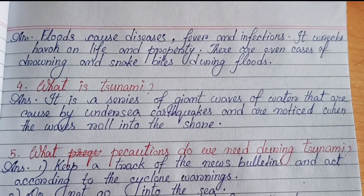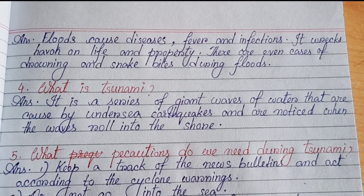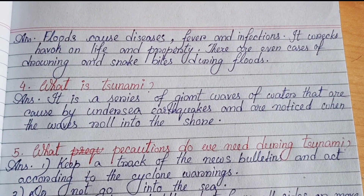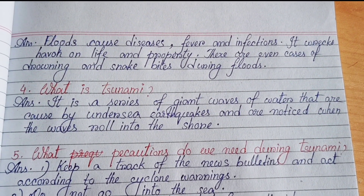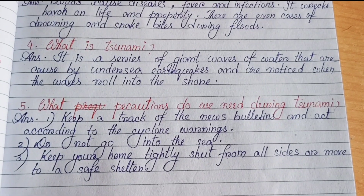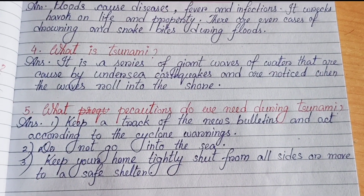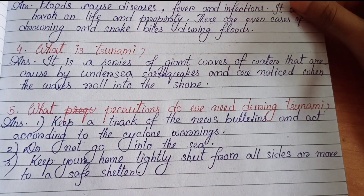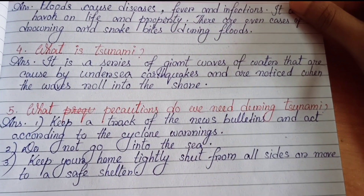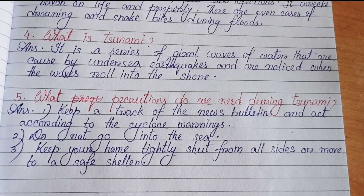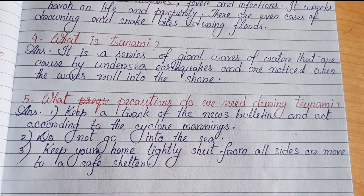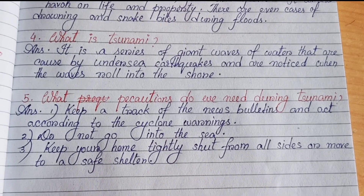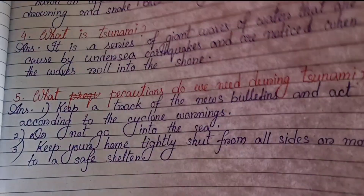Number 4: What is a tsunami? It is a series of giant waves of water that are caused by undersea earthquakes and are noticed when the waves roll into the shore. Number 5: What precautions do we need during a tsunami? Number 1: Keep track of the news bulletins and act according to the cyclone warnings. Number 2: Do not go into the sea. Number 3: Keep your home tightly shut from all sides or move to a safe shelter.